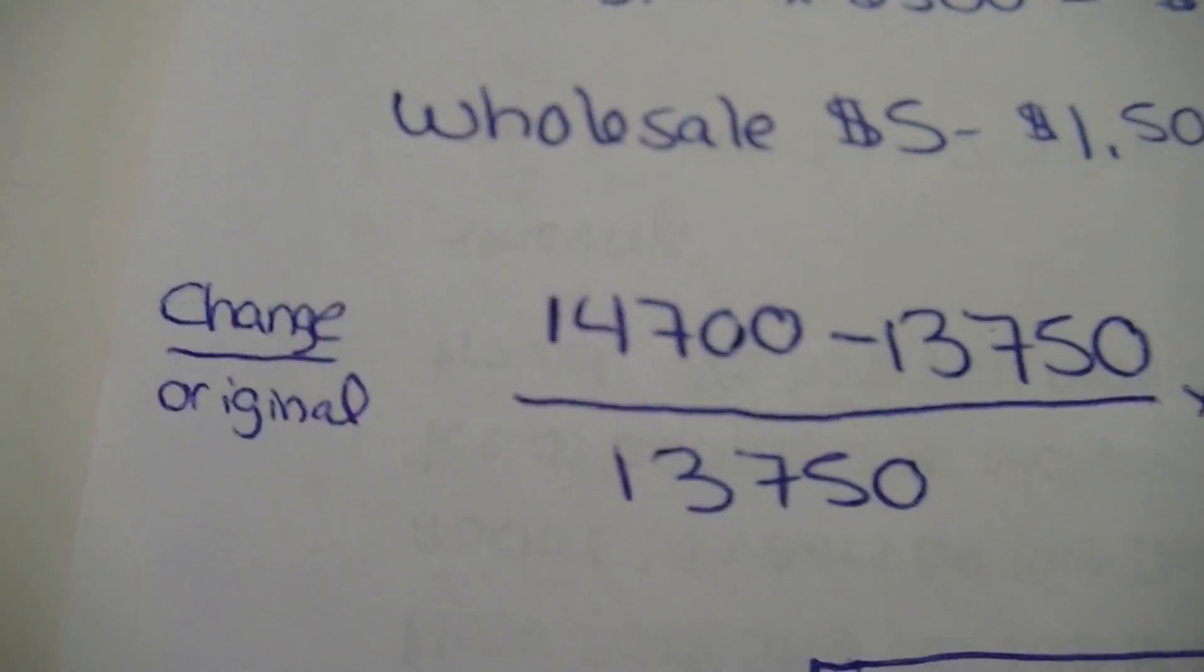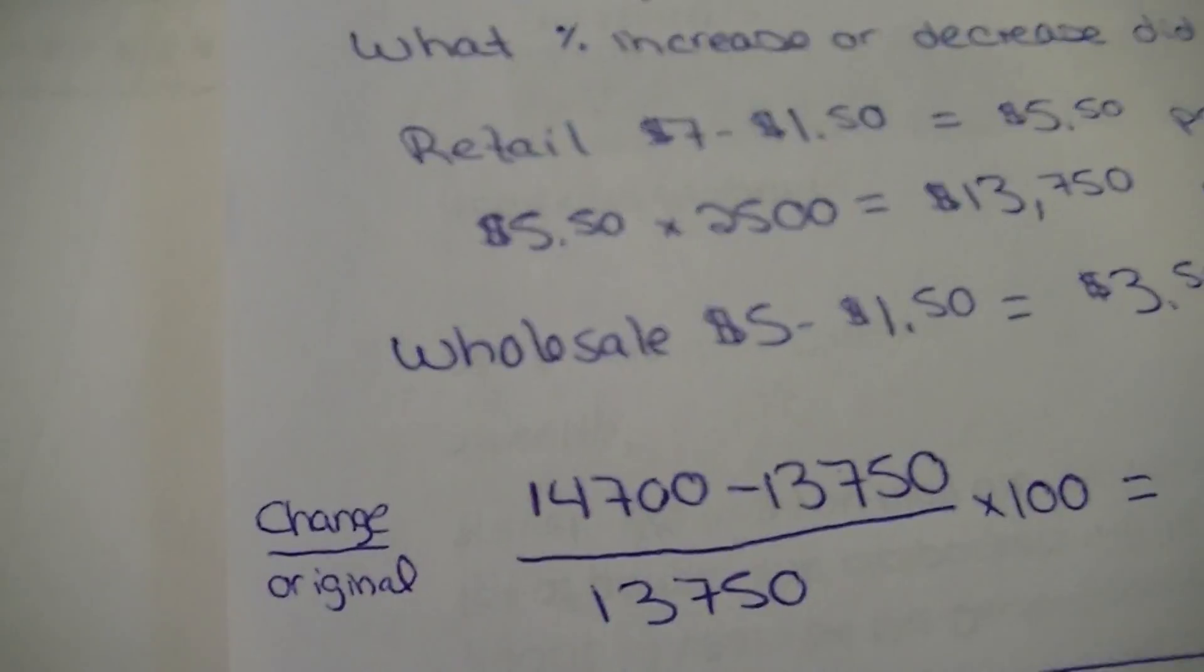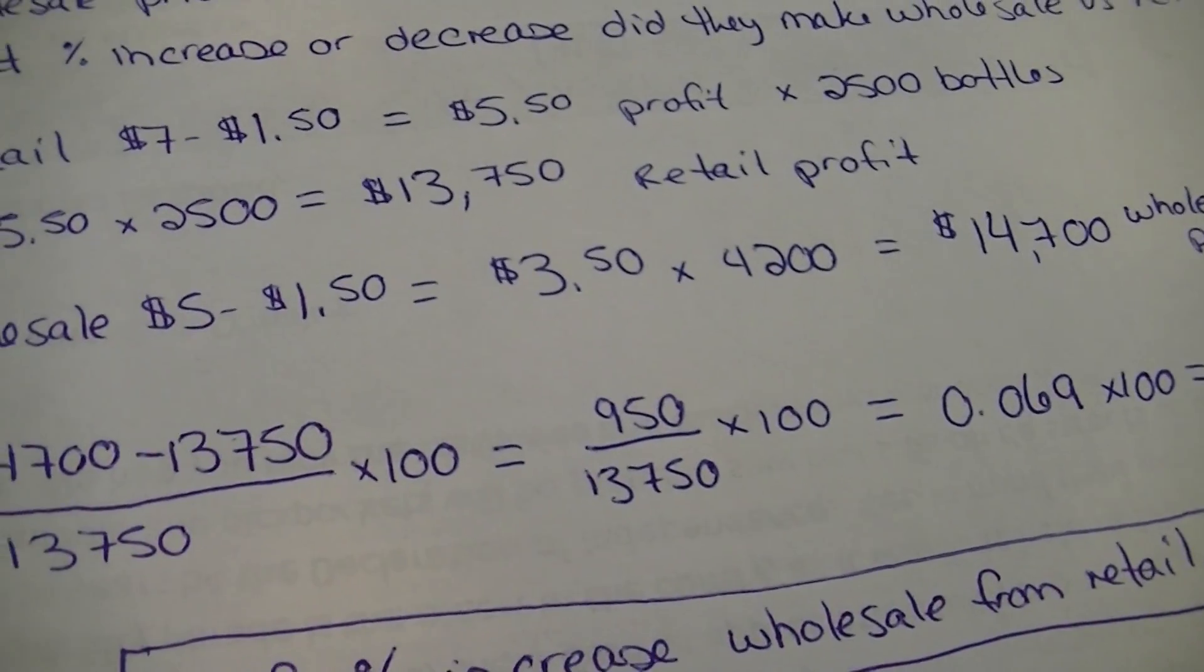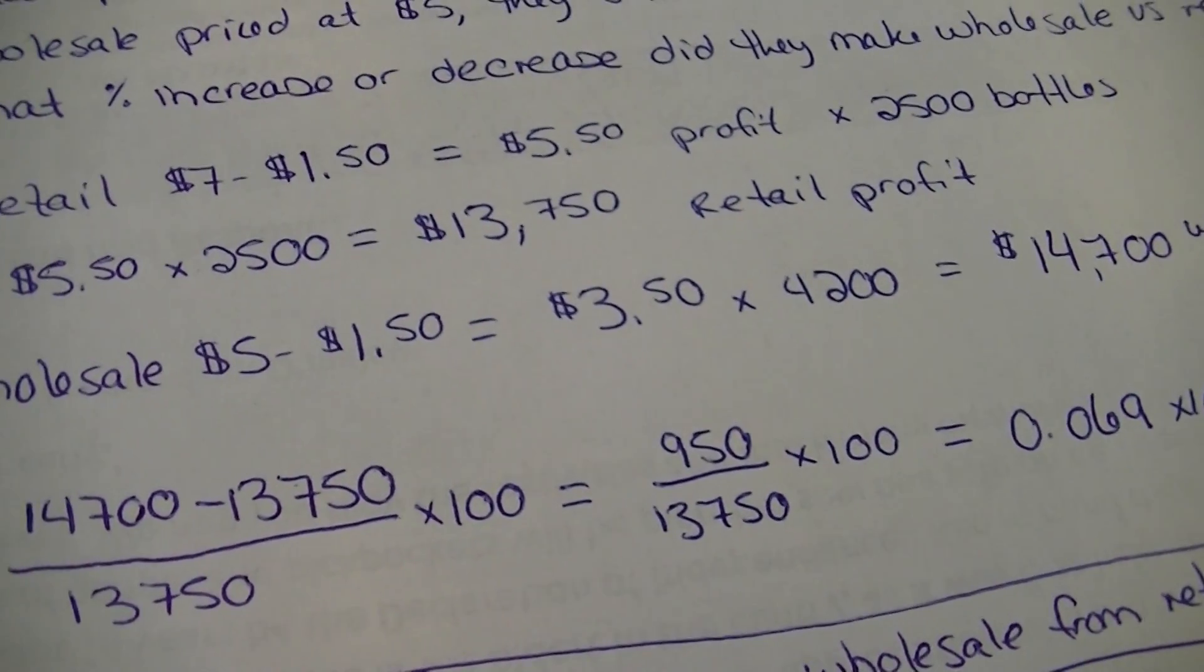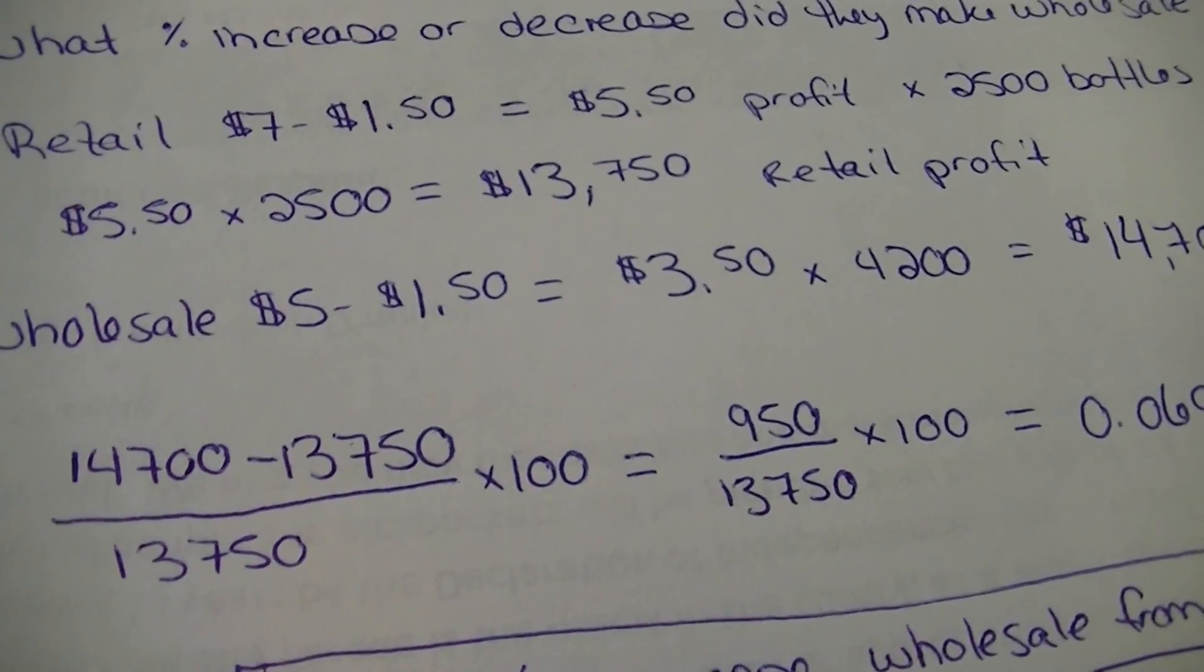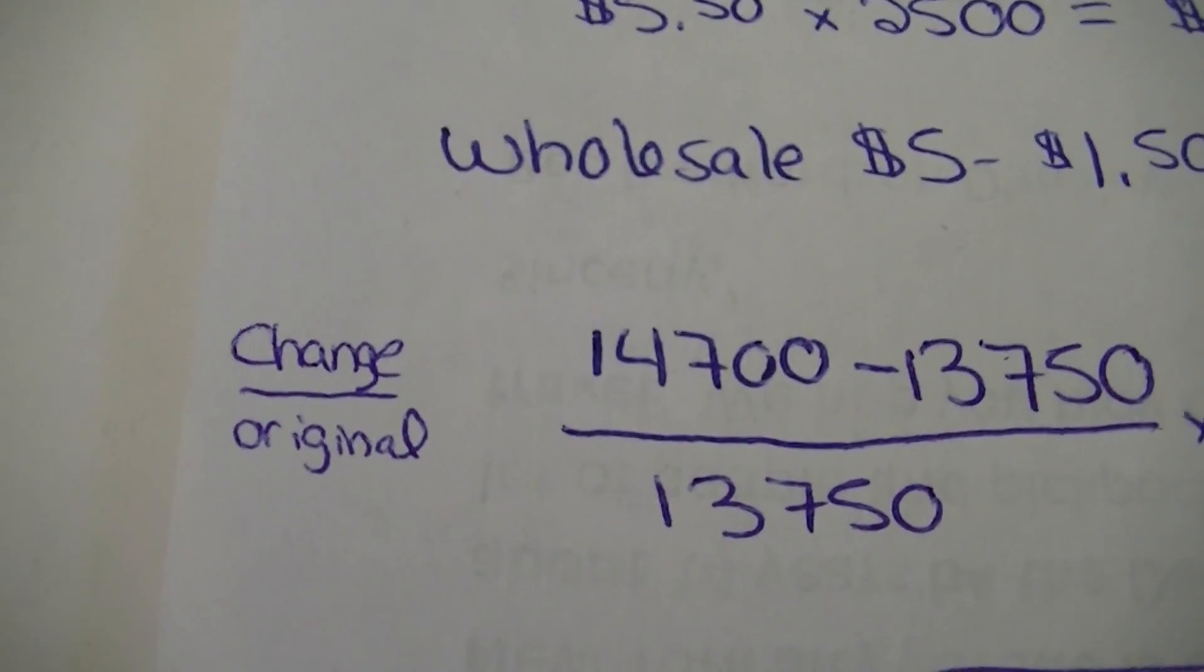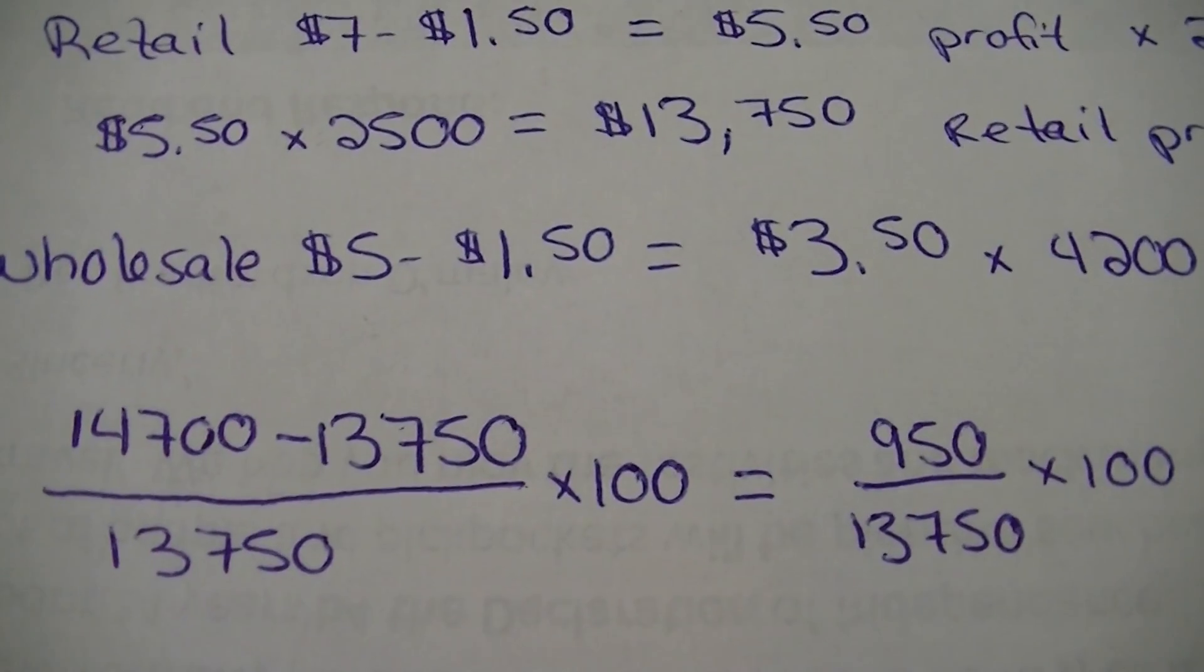Okay. So let's find our change first. Now, how am I getting that change? Again, we're looking at our retail profit and our wholesale profit, right? Our wholesale profit was $14,700. And we're going to subtract that retail profit of $13,750 to get our change, because we want that change over original, right? So the change is the difference between the two. So when we subtract that out, we get $950.